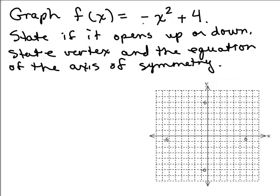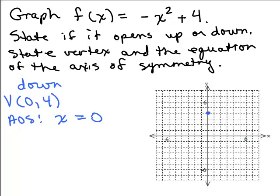The minus sign tells me it opens down. Since there's no x term, the vertex equals the y-intercept: (0, 4). The axis of symmetry is x = 0. From the vertex at (0, 4), go over 1 and down 1, over 2 and down 4, over 3 and down 9 — using the pattern 1², 2², 3². Mirror those points to the other side and connect them for an accurate graph of f(x) = -x² + 4.